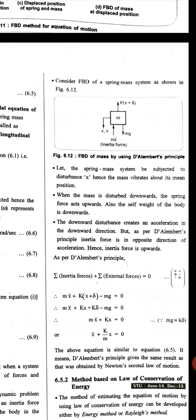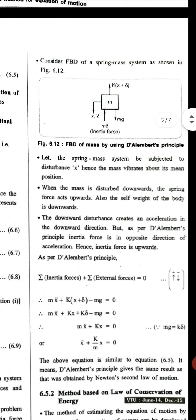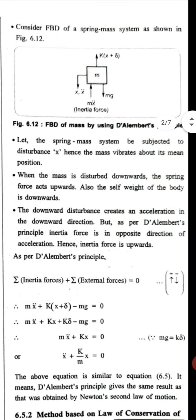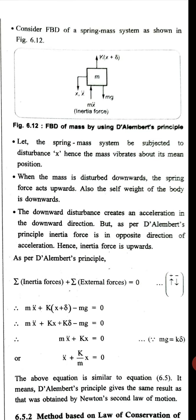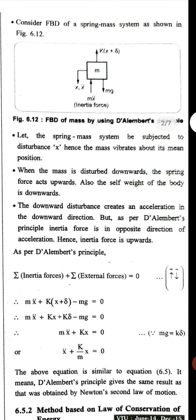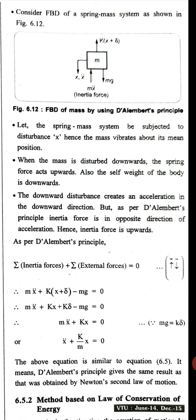With the mass mg acting downwards, let the spring-mass system be subjected to a disturbance X as the mass vibrates about its mean position. When the mass is disturbed downwards, the spring force acts upwards. Also, the self weight of the body is downwards, that is mg. The downward disturbance creates an acceleration in the downward direction, but as per D'Alembert's principle, the inertia force acts in the opposite direction.